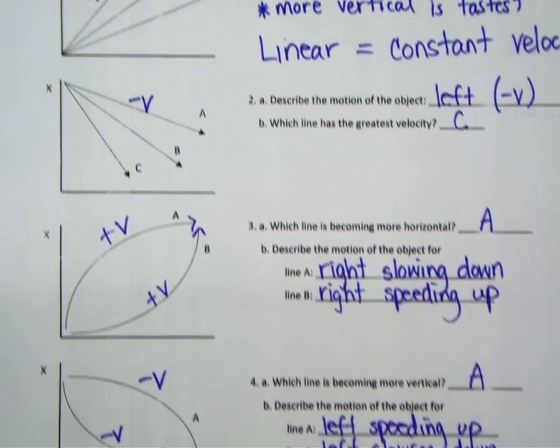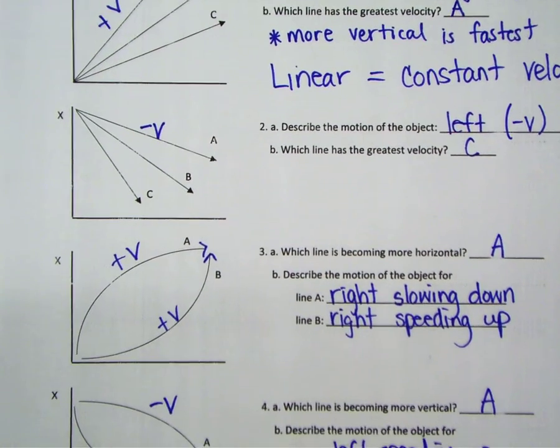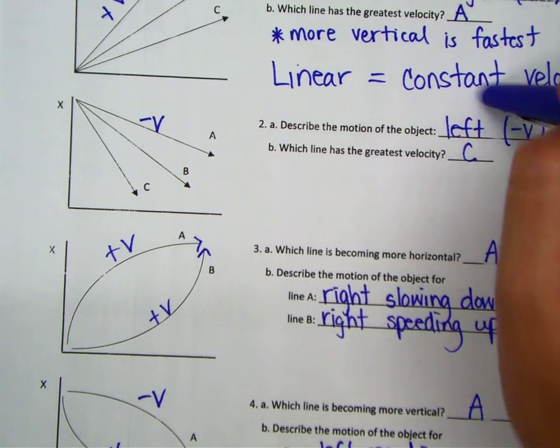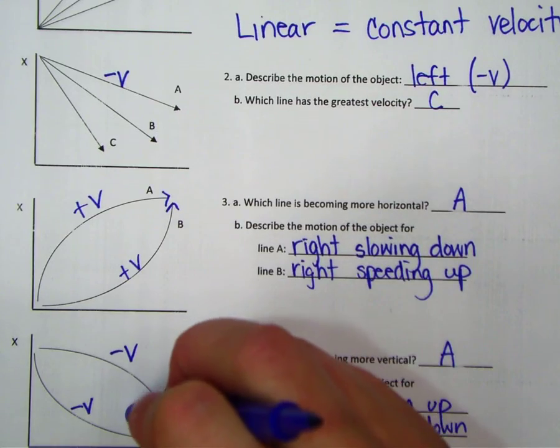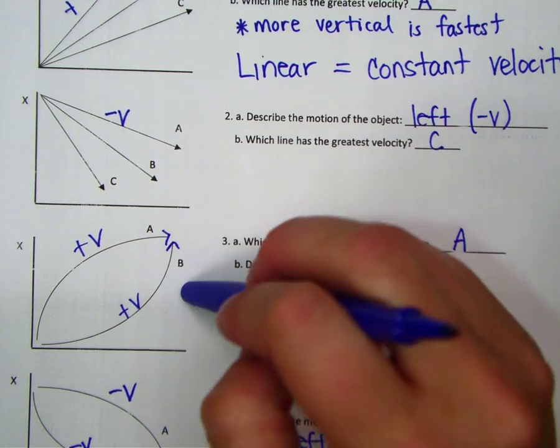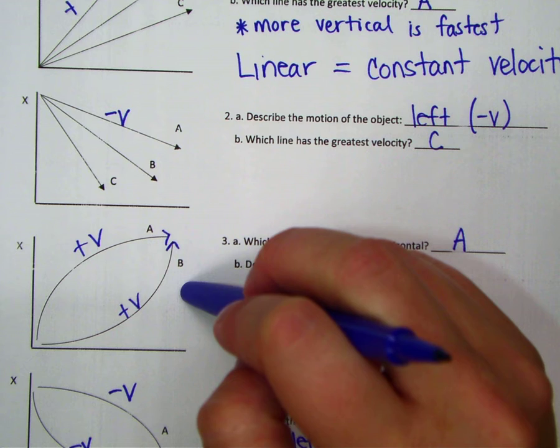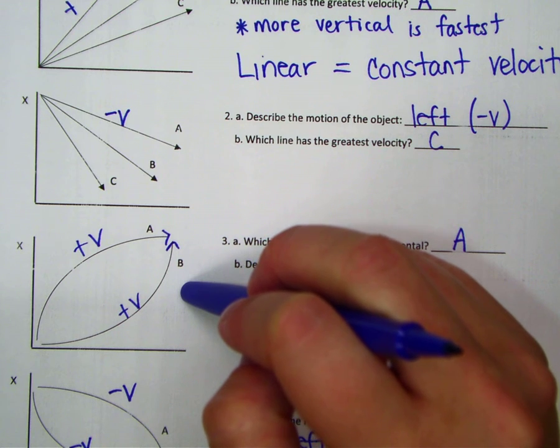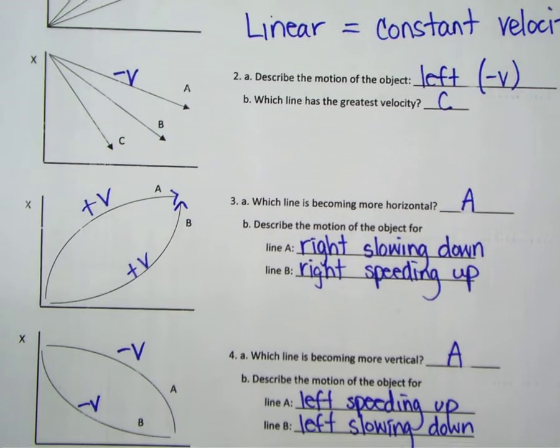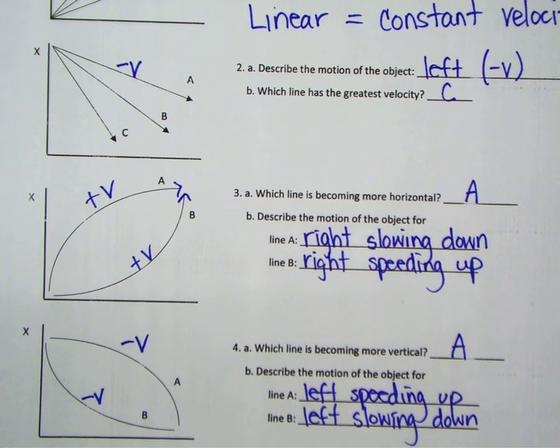What's the difference between graphs one and two and three and four? Well, graphs one and two have a constant velocity. Graphs three and four are accelerating. Graphs one and three are both moving to the right or positive. Graphs two and four are both moving to the left because they have negative velocity.